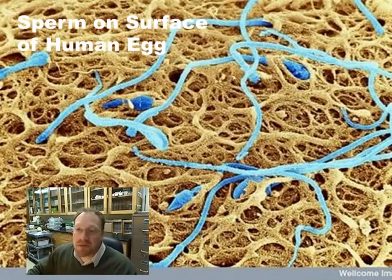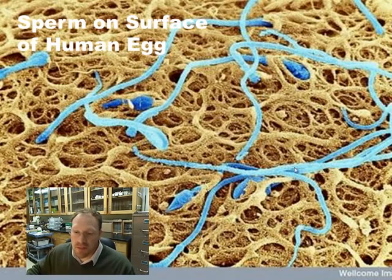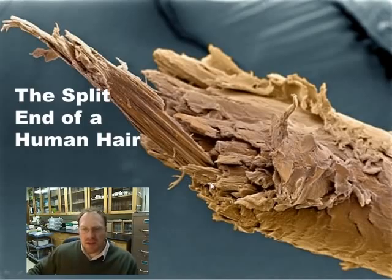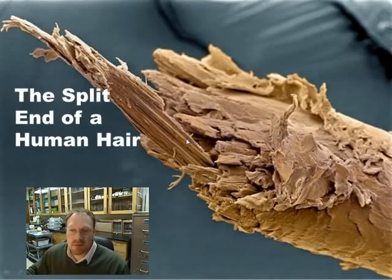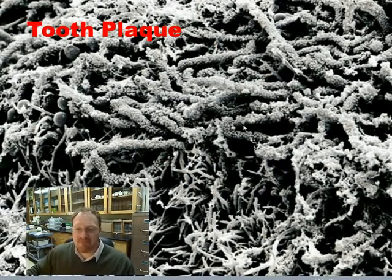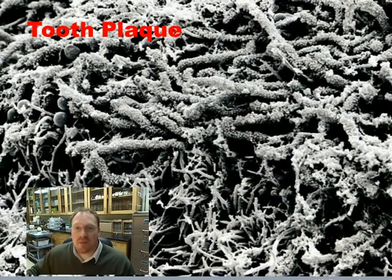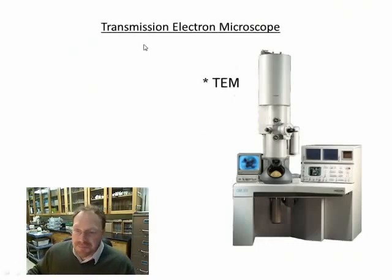This is sperm interacting on the surface of an egg cell — the sperm are obviously much smaller than the egg. This is a split end — a broken-off end of a human hair — showing a three-dimensional image. These are bacterial colonies or tooth plaque growing on the surface of a tooth. This is what grows on your teeth if you don't brush for a couple of days — it's actually always growing, and it's what makes your breath really stinky in the morning. So brush your teeth, ladies and gentlemen.